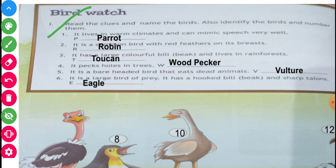Parrot has — if you will give any word, parrot will repeat it as a mimicry — just like you will speak 'good morning', parrot will repeat as it. This type of technique is mimicry. Mimic speech very easily — parrot will repeat. So another second comment: it is a common word with red feather. Second is Robin — clue word R is here. Match with this word: Robin R-O-B-I-N.